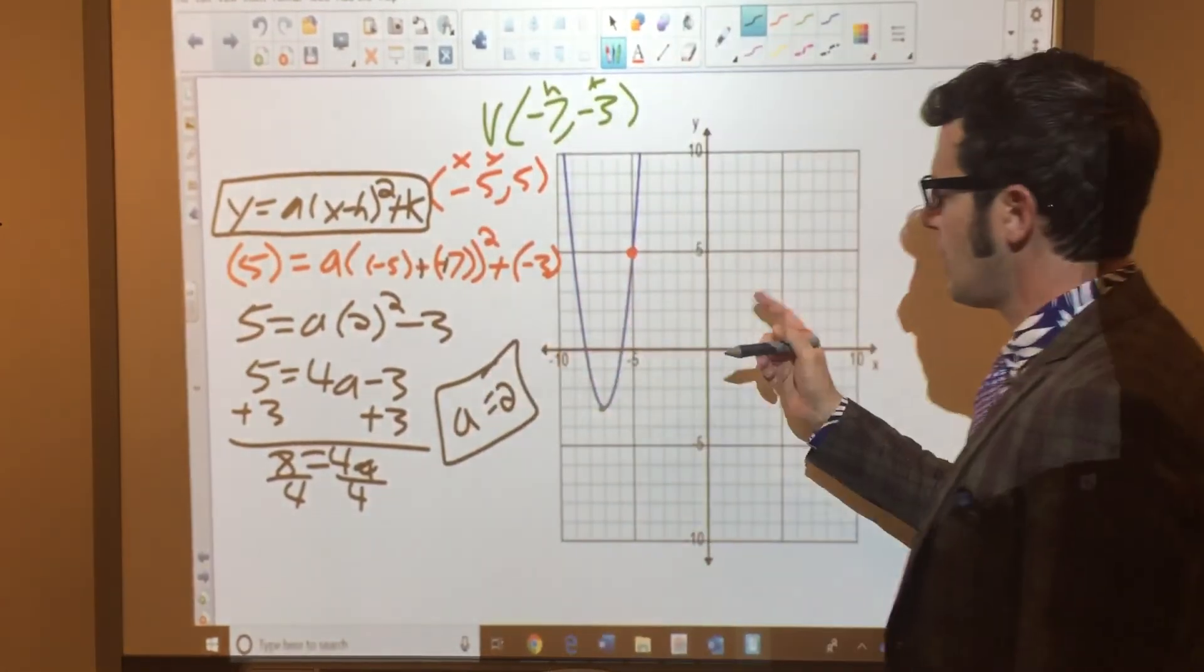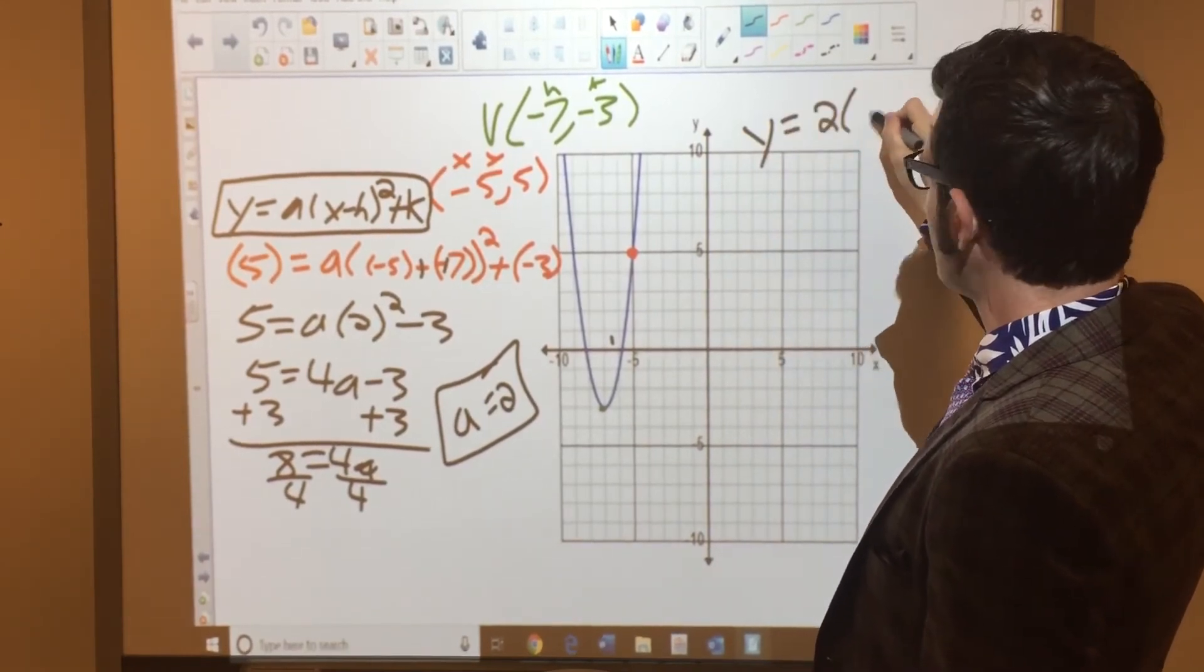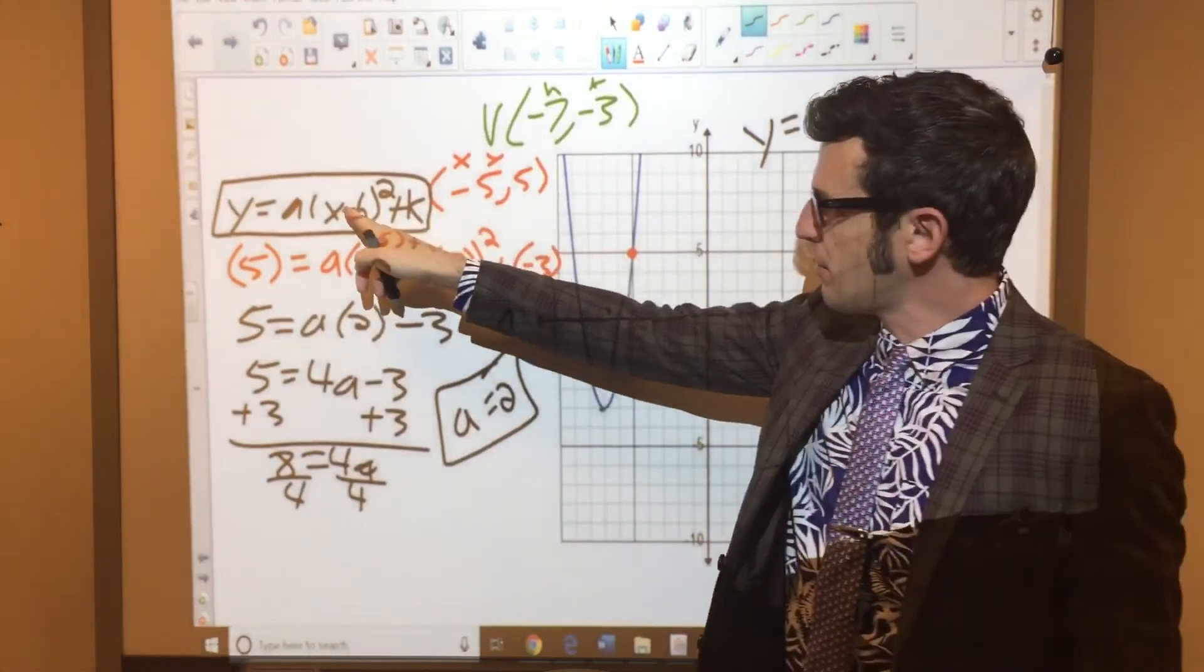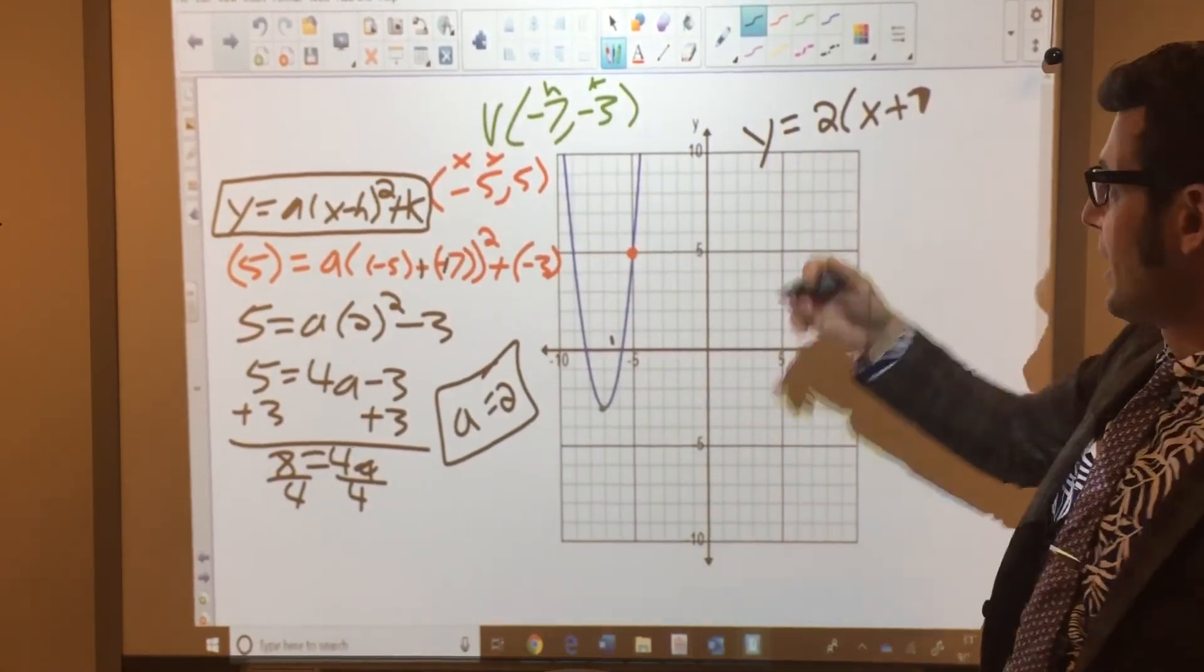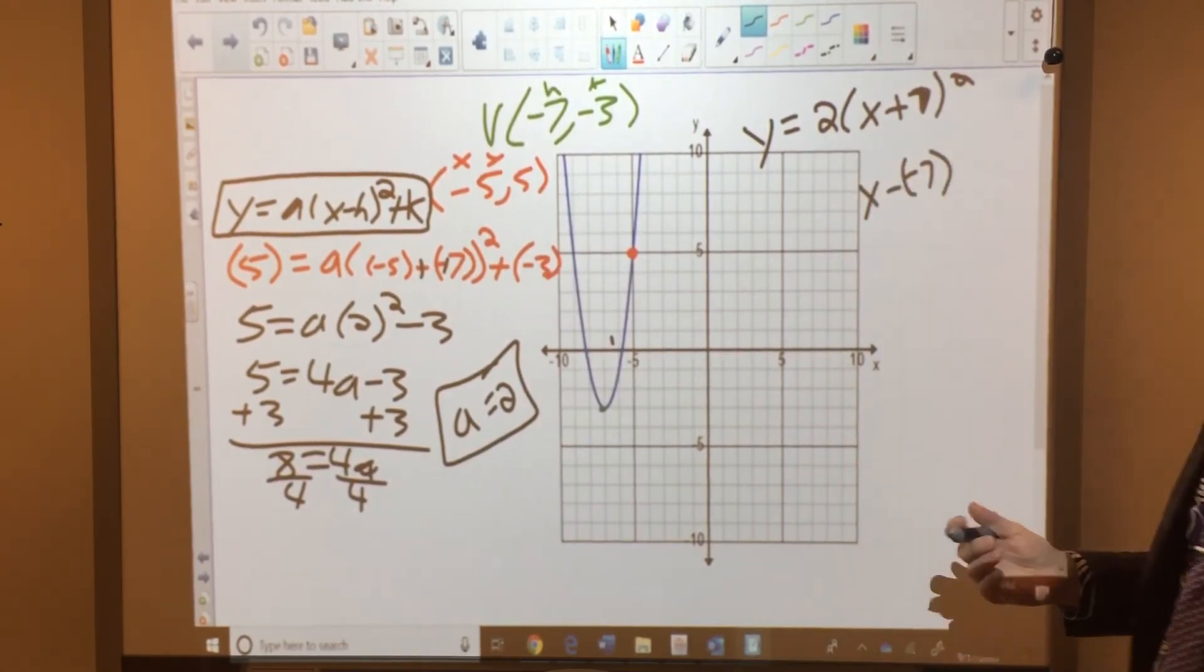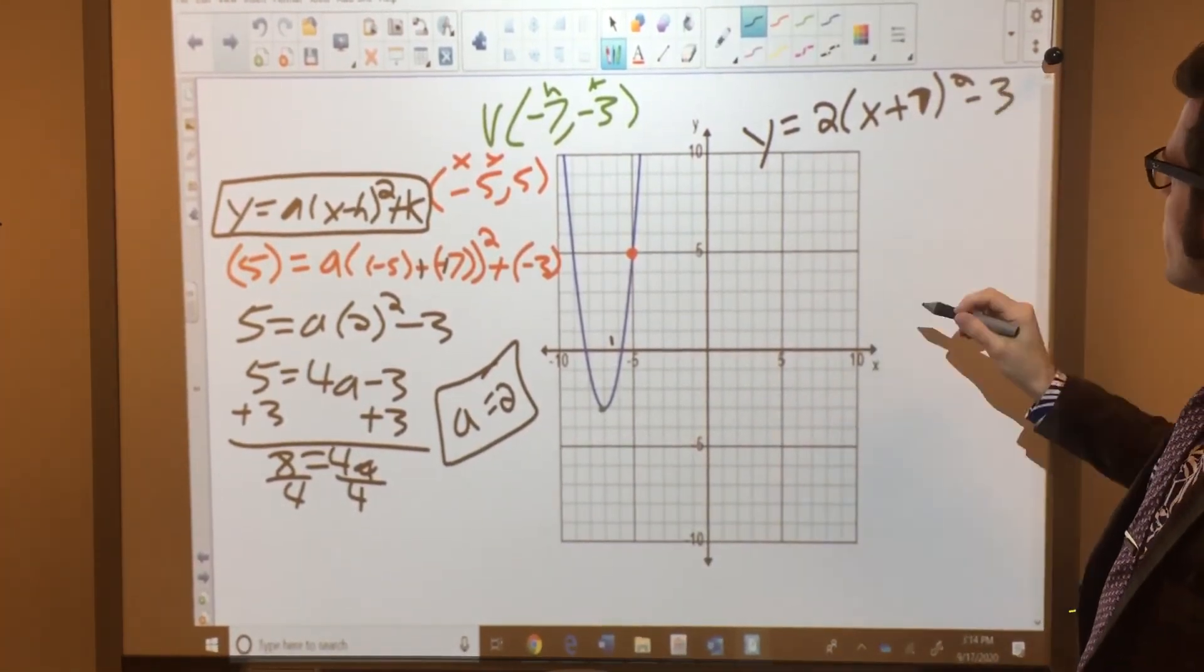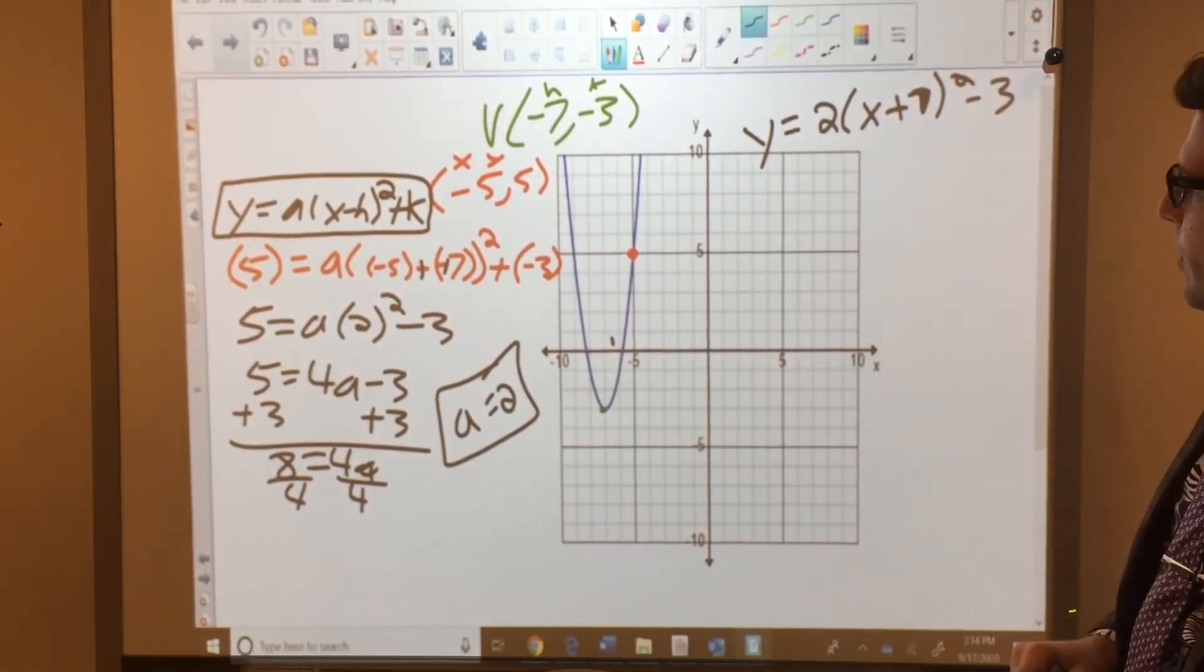So the equation that would generate this graph is y equals 2 times x minus negative 7. So I'm going to make this plus 7, because it was already minus in the formula, or in the original form, the general form, and I'm plugging in a negative. So negative times a negative makes a positive. What I'm doing here basically is this, in case you're wondering, negative negative, negative positive, and then plus negative 3 at the end, or just minus 3. So y equals 2 parentheses x plus 7 squared minus 3.